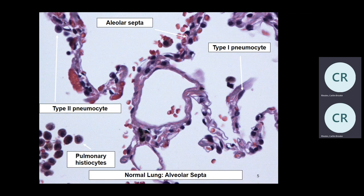Know your cytology. This is a high-power view — you can see the vessel here with RBCs. Vessels are lined by endothelial cells; these cells lining the airway septa are epithelial cells. Know your type 1 pneumocytes and type 2 epithelial cells, which produce surfactants. The other cells you see in the lung are alveolar macrophages — for example, in the corner here, those are macrophages.